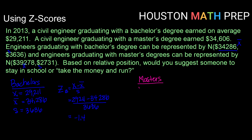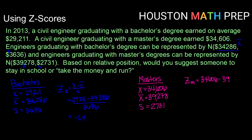The starting salary for a master's degree was $34,606. The average salary for a master's degree was $39,278, and the standard deviation was $2,731. Using our Z-score formula for a master's degree, we get $34,606 minus $39,278 over $2,731. If we calculate that, we get a Z-score of about negative 1.7.